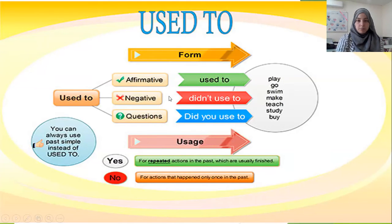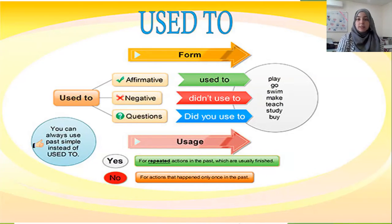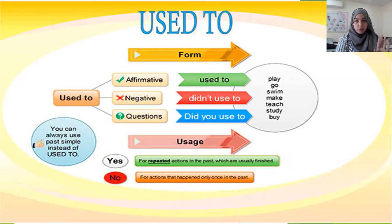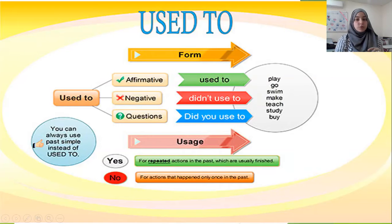For the negative form, use verb two again. In order to give a negative form, you need didn't. So: I didn't use to play. Since we already have did, we do not add a -d or -ed at the end — we cannot have two past tense markers. So: didn't use to play, didn't use to go.